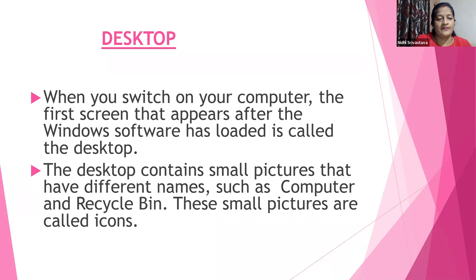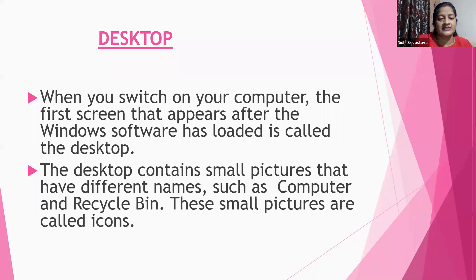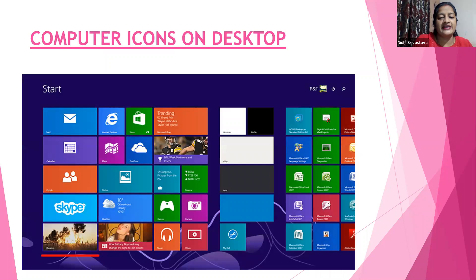Desktop. When you switch on your computer, the first screen that appears after the Windows software has loaded is called the desktop. The desktop contains small pictures that have different names, such as Computer and Recycle Bin. These small pictures are called icons. This is the image which you have seen in your computer system — computer icons on the desktop. These small images are called computer icons and this screen is known as the desktop.